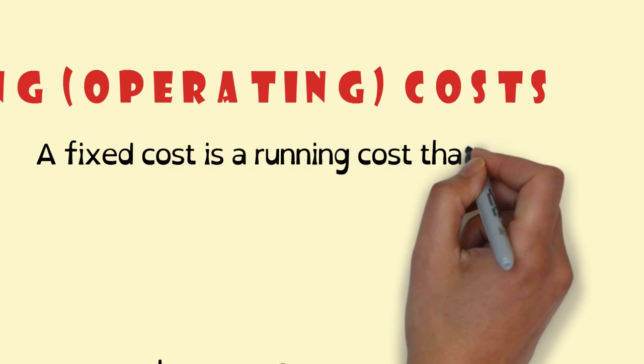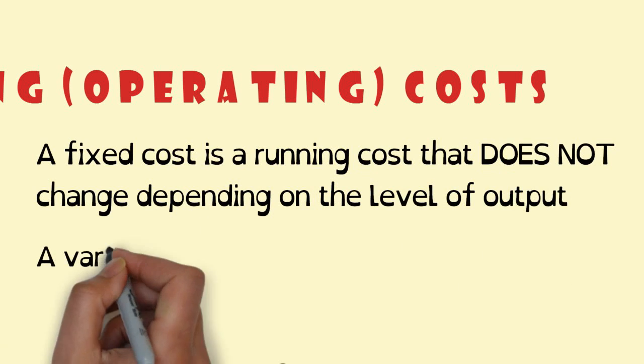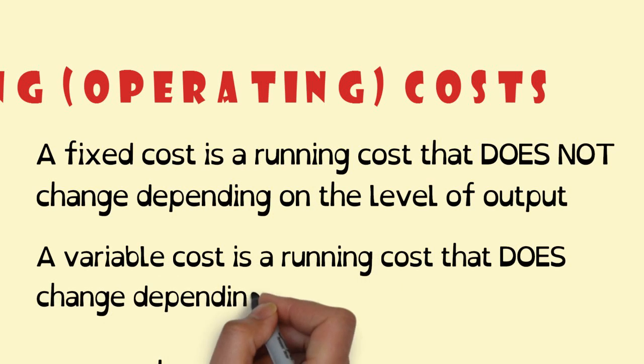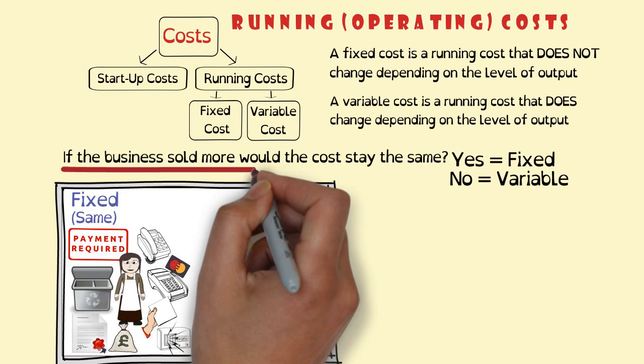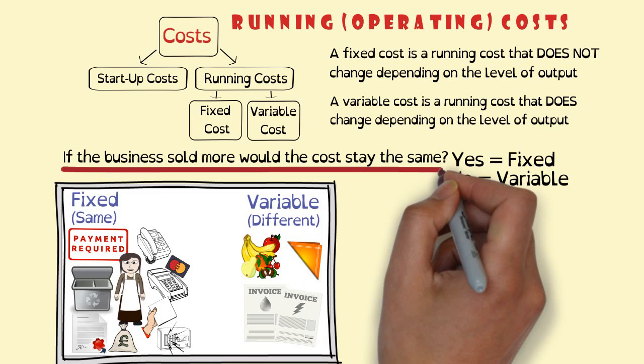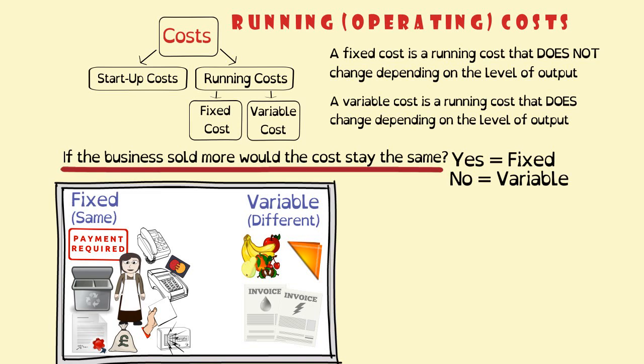So a fixed cost is a running cost that does not change depending on the level of output, and a variable cost is a running cost that does change depending on the level of output. It's essential to get a full understanding of the difference between these two costs - fixed and variable costs - as a lot of the other business finance areas require a good, clear, and correct identification of what a fixed and a variable cost is. So remember, ask yourself this question: if the business sold more, would the running cost stay the same?